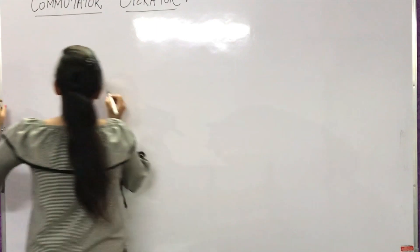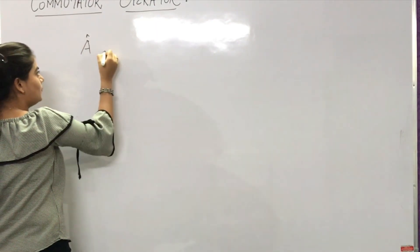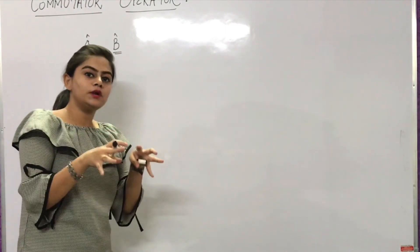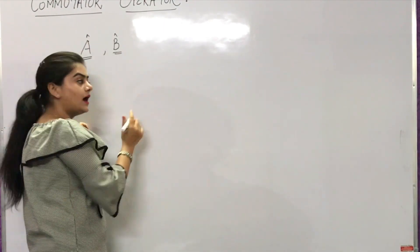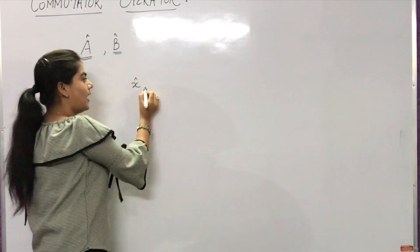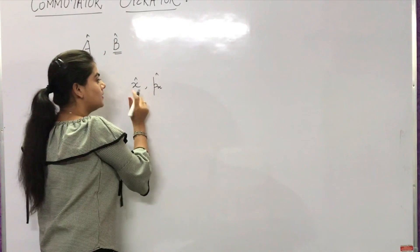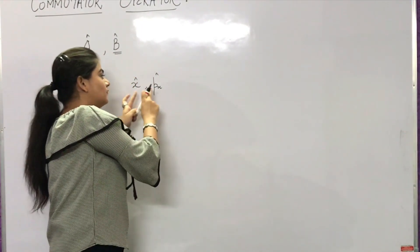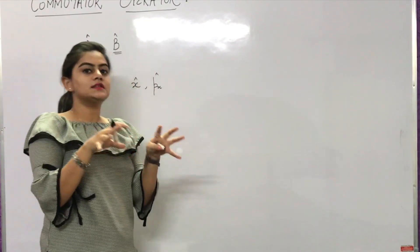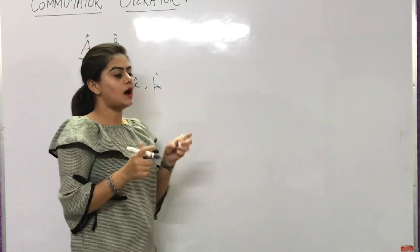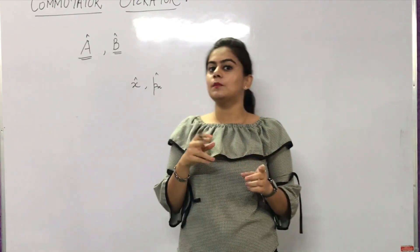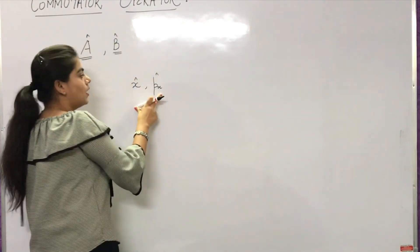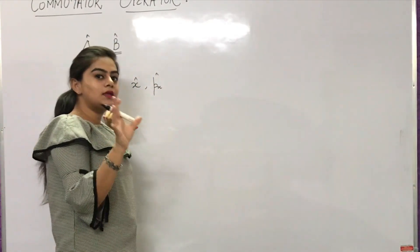Like if I have any operator A and one operator B, whether both of these quantities can be measured accurately at the same time. Like I have a position operator X cap and a momentum operator P_X cap — if both of these commute with each other, it means both observables can be measured simultaneously. But according to Heisenberg's uncertainty principle, which we have read in previous videos, these two quantities cannot be measured accurately at the same time.